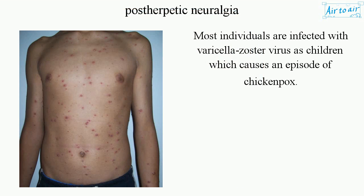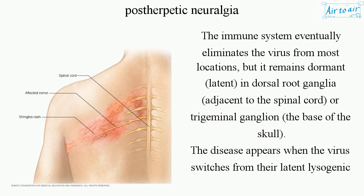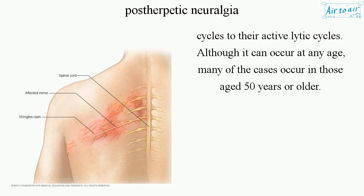Most individuals are infected with varicella zoster virus as children, which causes an episode of chicken pox. The immune system eventually eliminates the virus from most locations, but it remains dormant — latent — in dorsal root ganglia adjacent to the spinal cord or trigeminal ganglion at the base of the skull. The disease appears when the virus switches from its latent lysogenic cycle to its active lytic cycle.